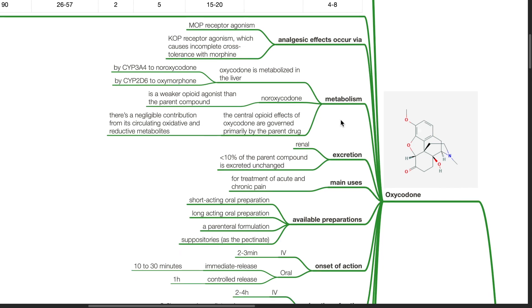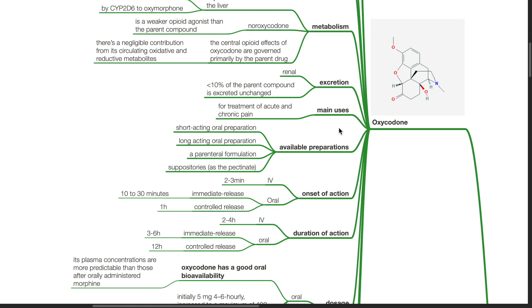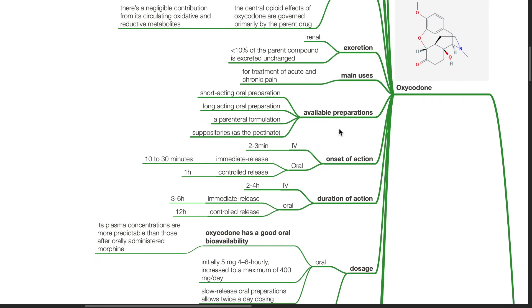Excretion is renal. Less than 10% of the parent compound is excreted unchanged. Oxycodone is mainly used for treatment of acute and chronic pain. Available preparations include short-acting and long-acting oral preparations, a parenteral formulation, and suppositories.